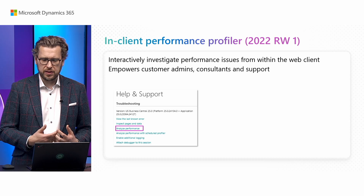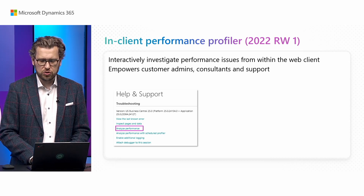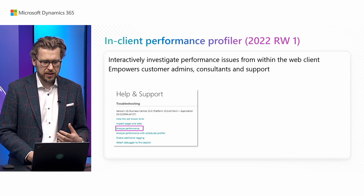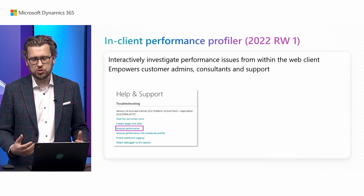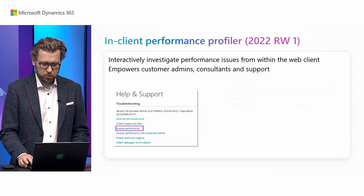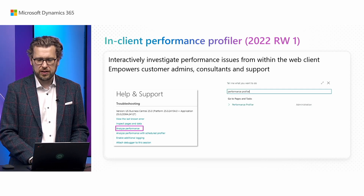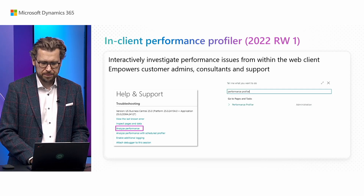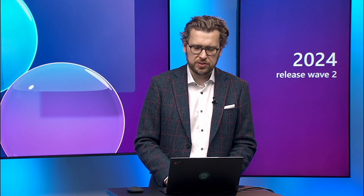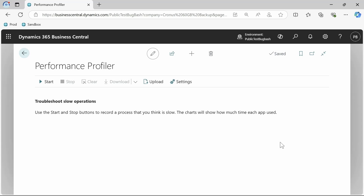As a recap, you open the in-client performance profiler from the Help and Support page. There's a troubleshooting section where you can choose 'Analyze Performance', or you can also search for 'Performance Profiler' in the Tell Me. Let's switch to the client and see what happens — here we can see the in-client performance profiler that we've had in the product for quite some releases.